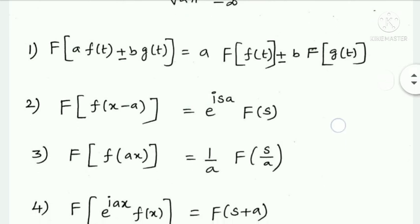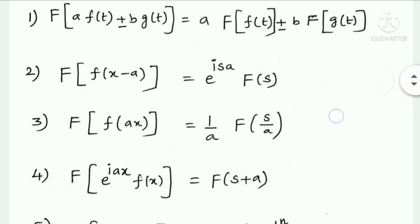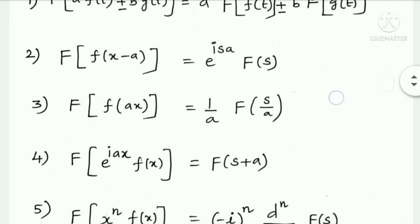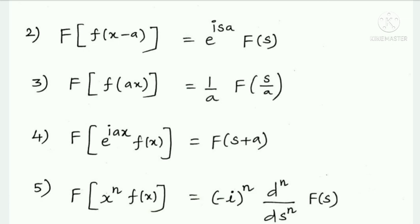The third property: Fourier Transform of f(ax) equals (1/a) times the Fourier Transform of f(S/a). The fourth property: Fourier Transform of e^(iax) times f(x) equals F(S + a).